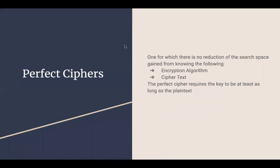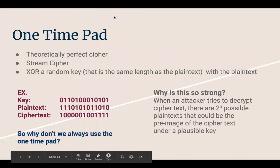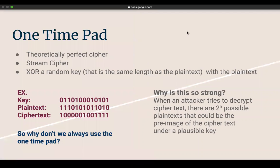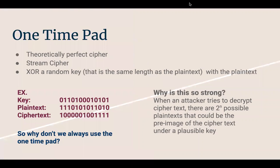Perfect ciphers are a concept in cryptography where, in an ideal cipher, an interceptor shouldn't be able to gain the message even if they have the encryption algorithm and the ciphertext. This kind of thinking requires the key to be just as long as the plain text. The one-time pad is theoretically a perfect cipher — it's also a stream cipher where you XOR the key with the plain text, and the key is as long as the plain text.